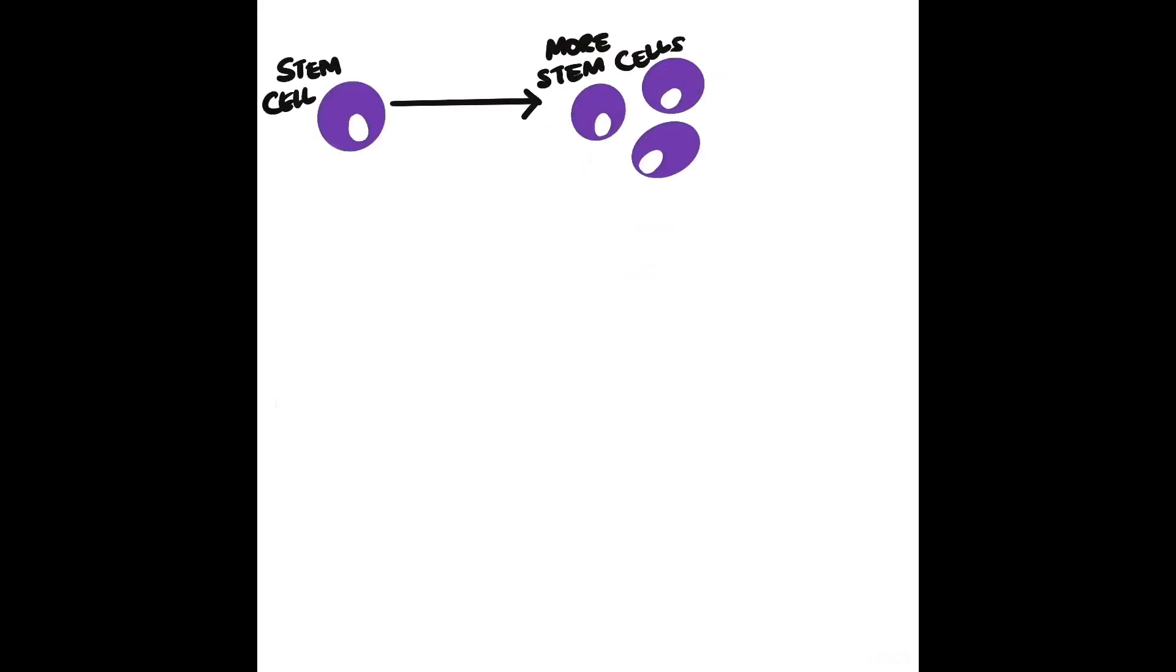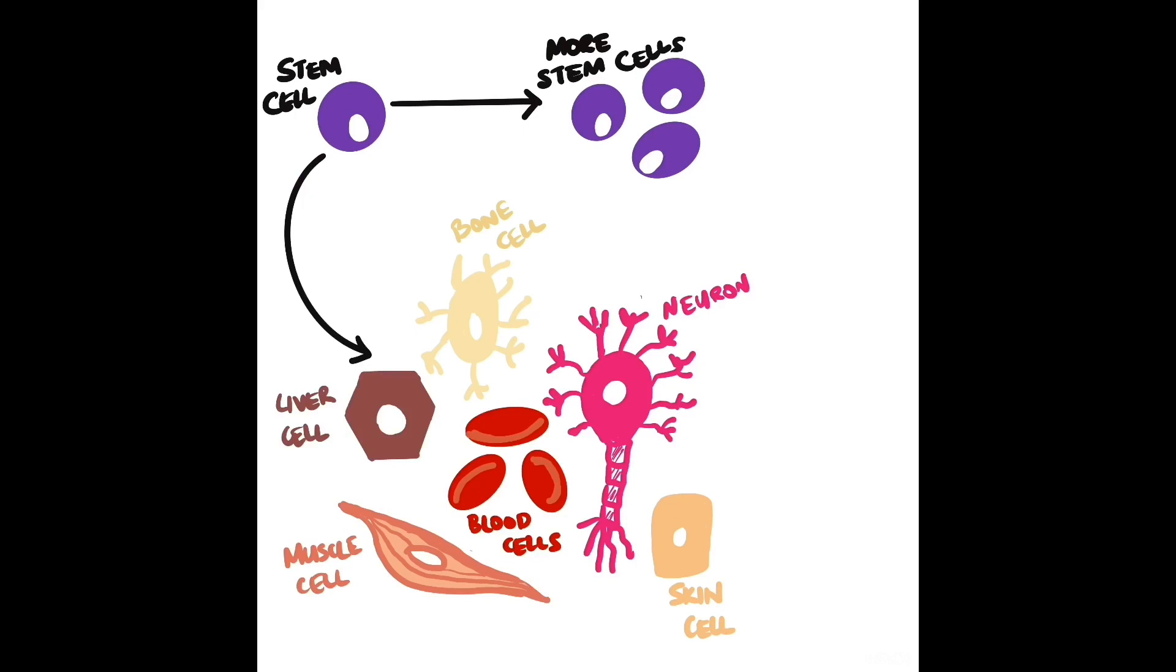Stem cells are unique because they can give rise to more stem cells, but more importantly, they can give rise to a number of other cells that then go on to make up all the organs and tissues in our body.